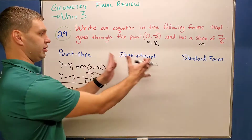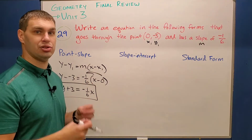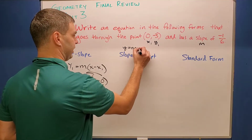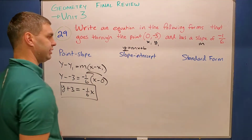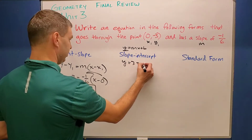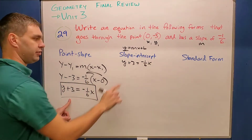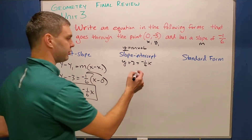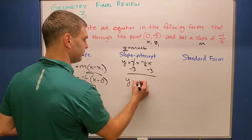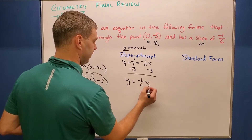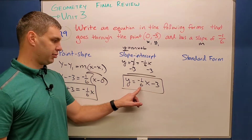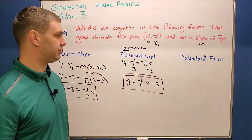From point-slope you can go to slope-intercept very easily by solving for y. Slope-intercept is the form y equals mx plus b, so the y is isolated. Taking y plus 3 equals negative 1/6 x and subtracting 3 from both sides, we get y equals negative 1/6 x minus 3. This is slope-intercept form: y equals mx plus b.